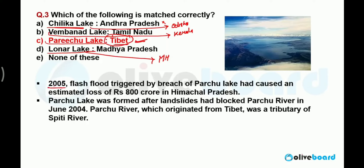In the year 2005, flooding triggered by the breach of Parichu Lake caused an estimated loss of 800 crore rupees. Remember, the lake is situated in Tibet, but the state that suffered from the flood was Himachal Pradesh. Parichu Lake was formed after landslides blocked the Parichu River. In June 2004, because of a landslide, the river was blocked and converted into a lake. Parichu River originated from Tibet and was a tributary of the Spiti River.